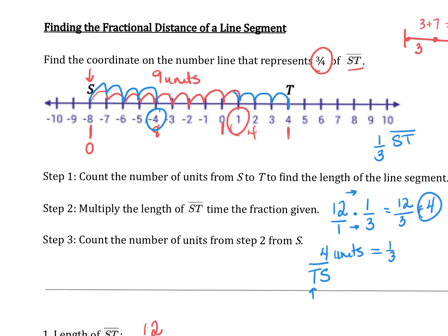1, 2, 3, 4, putting me at 0. So my coordinate or point on the number line that represents 1 third of TS is 0, where 1 third of ST is at negative 4.